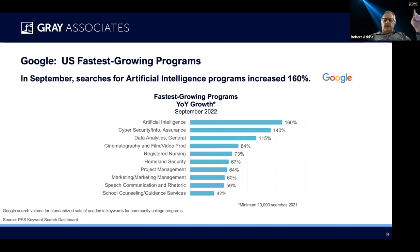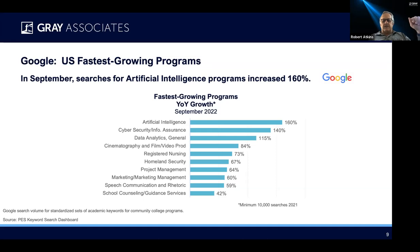In terms of what's growing fastest — artificial intelligence, number one. Cybersecurity, I mentioned to keep your eye on that — second fastest growing program. Think about that: it's growing 140% in terms of Google search volumes, and it's already one of the largest programs in the United States. Data analytics at 115% — one of the bigger ones still growing at a high percentage rate. And then we see one that I find very intriguing. It's been coming up consistently enough now that I believe it's a real trend: cinematography, film, video production is up 84%. Then registered nursing, homeland security, project management, marketing, management, speech communication and rhetoric, and school counseling guidance services. If I were putting these together in a theme, I'd say we have a lot about information technology/big data — AI, cybersecurity, data analytics — a little bit of health, and then a mishmash of other things.